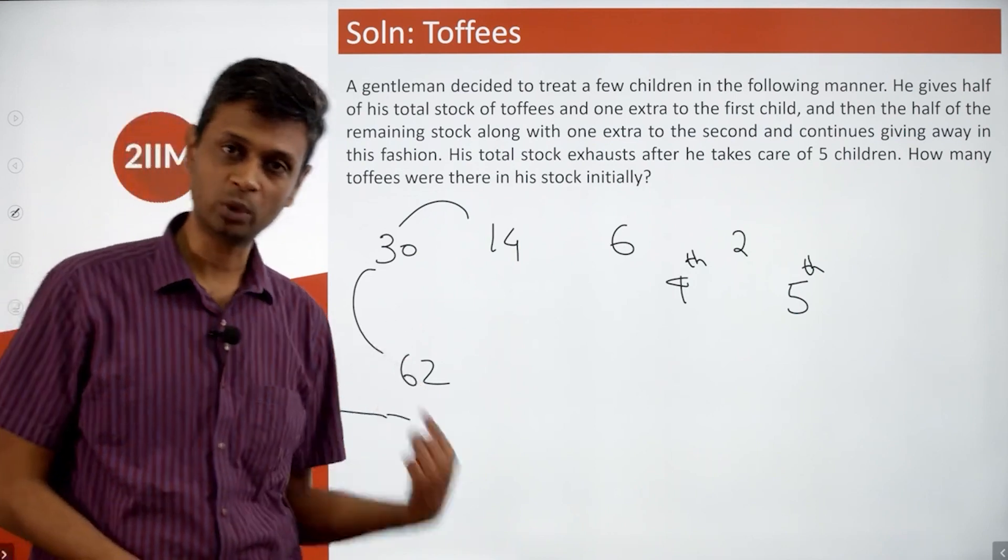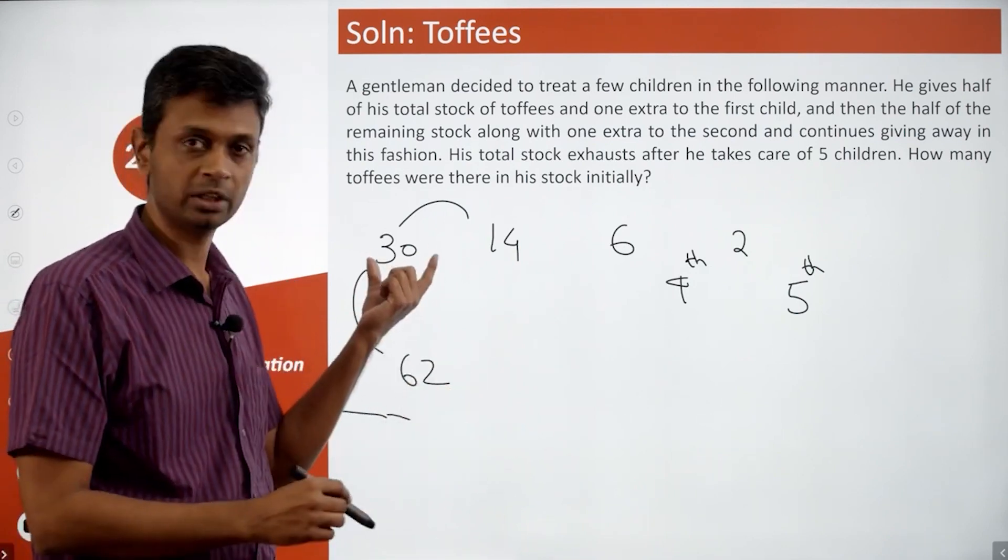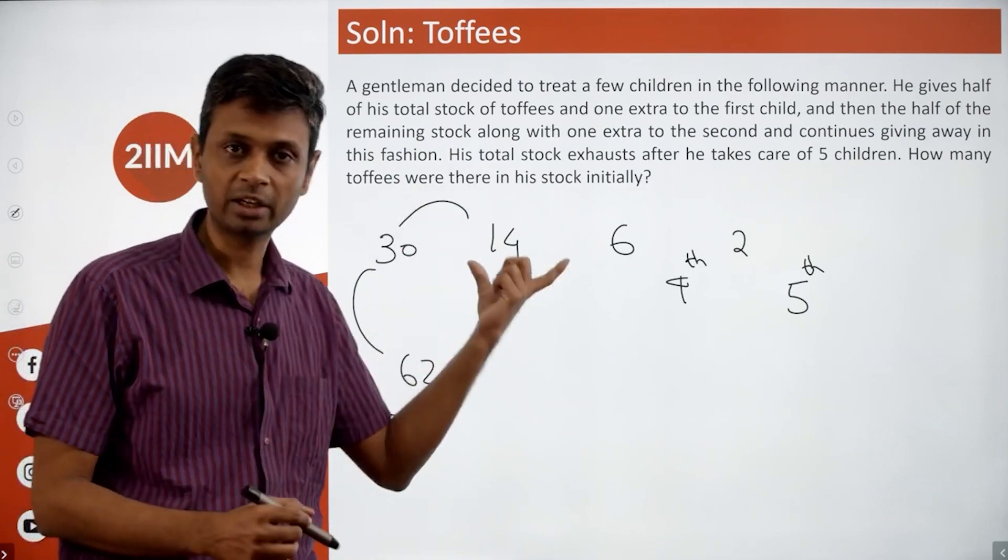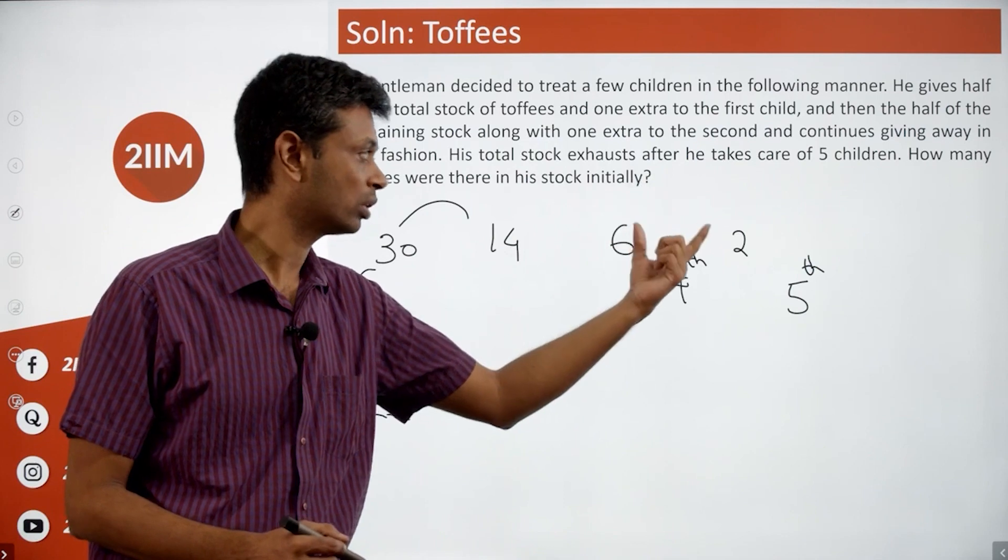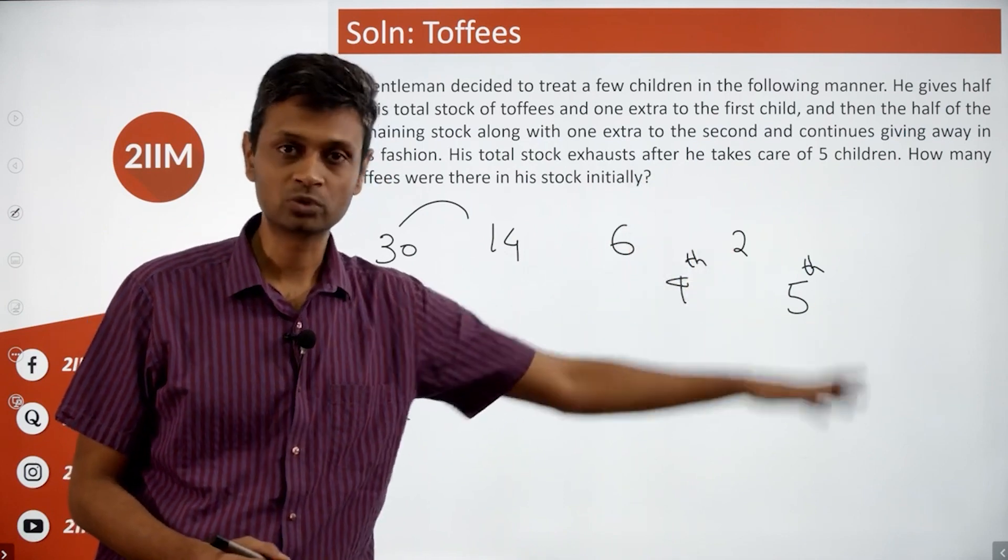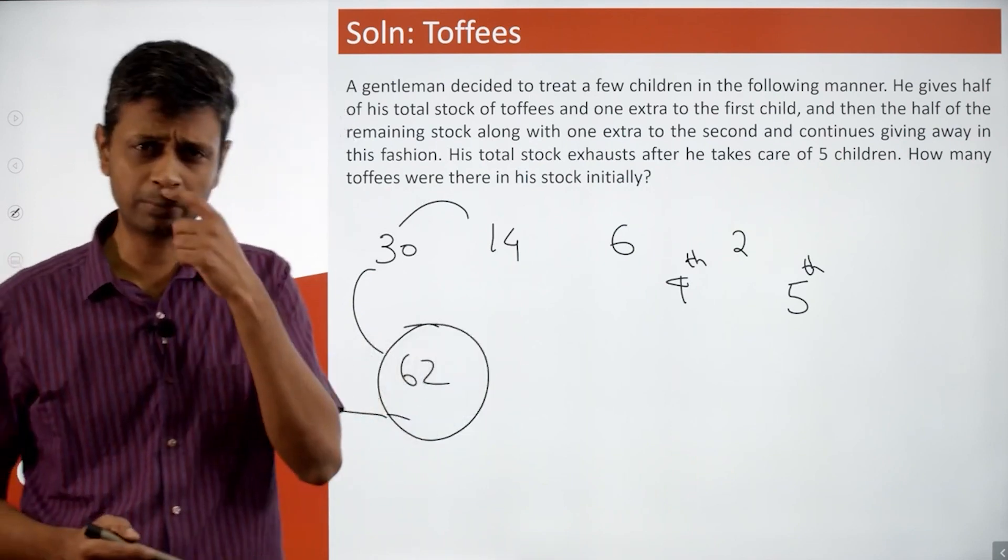He has sixty-two to begin with. He gives away thirty-two for the first kid, he has thirty remaining. He gives away sixteen for the second kid, has fourteen remaining. Gives away eight, has six remaining. Gives away four, has two remaining. Gives away the two. So he should have started with sixty-two toffees.